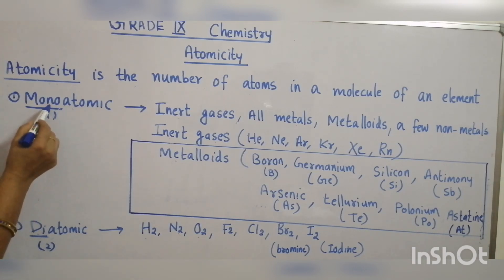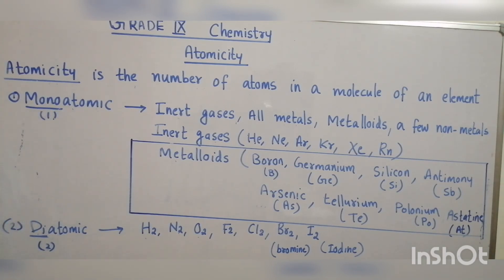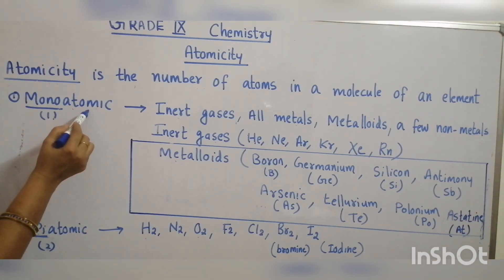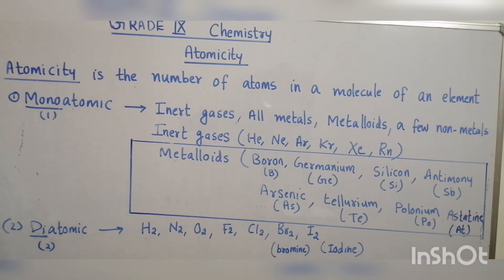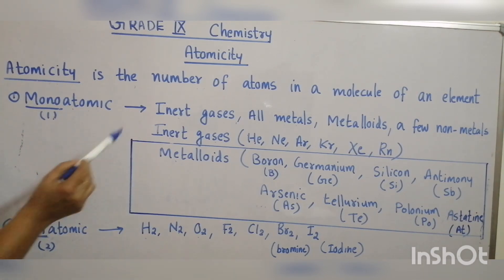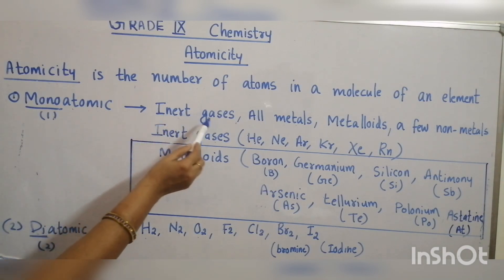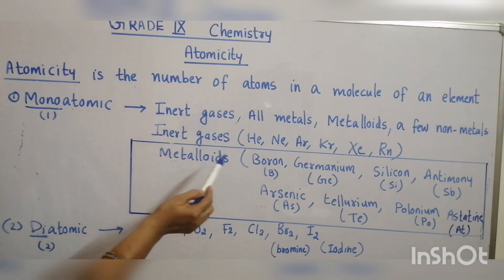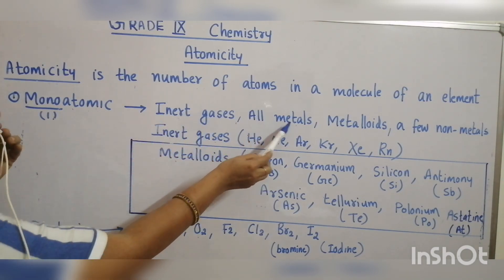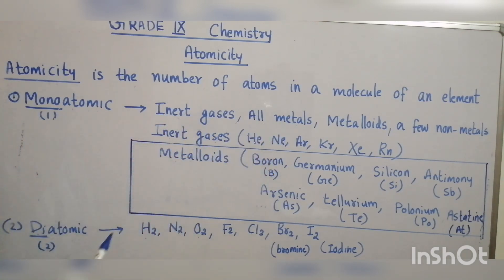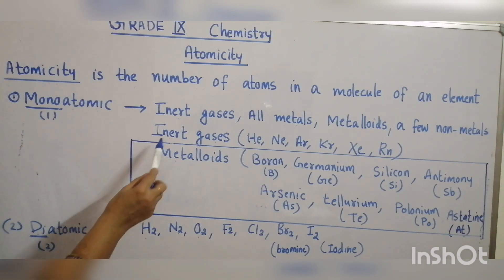Monoatomic — mono means one. There is only one atom present in the molecule of these elements. Examples are inert gases, all metals, metalloids, and a few non-metals.